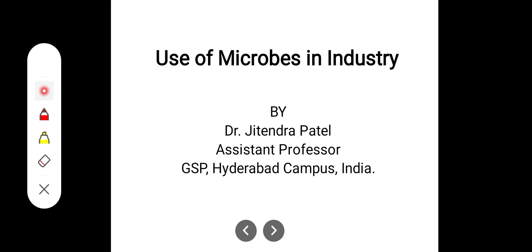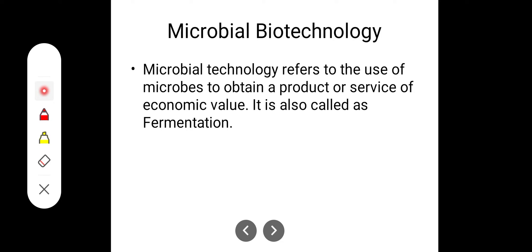Students, we are going to discuss the uses of microbes in the pharmaceutical industry and other industries. This falls under unit one, fifth topic: the use of microbes in industry. Microbial biotechnology refers to using microorganisms through different techniques to produce various products. It may be drug products or food products — to obtain a product or service of economic or commercial value. This is also called fermentation.